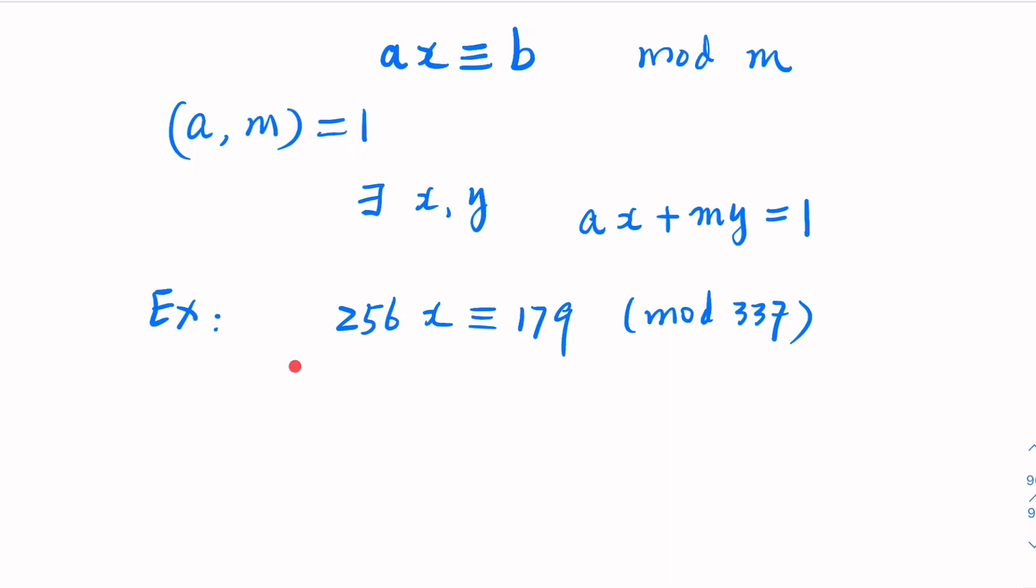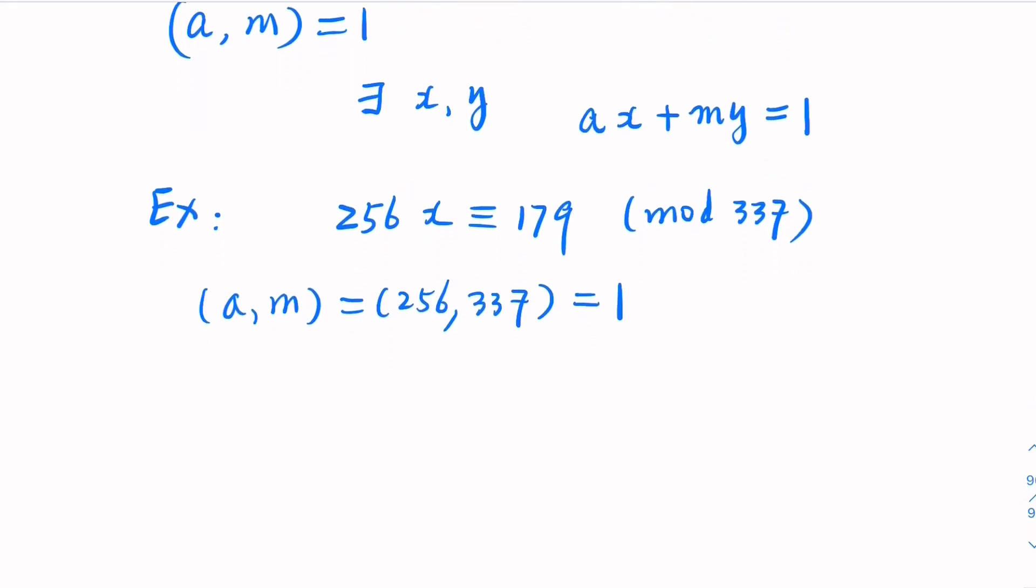So let's go to our example here. Mod 337, we try to solve the equation here. A is 256, and b is 179. These two numbers are coprime, so that is, a and m, in this case is 256 and 337, they're relatively prime. There exists x and y, but how do we find it? That's what is called Euclidean algorithm.